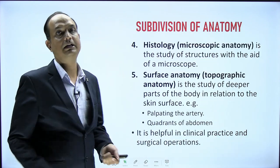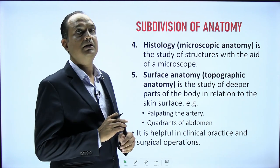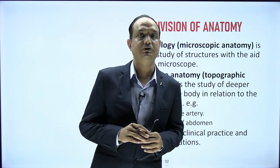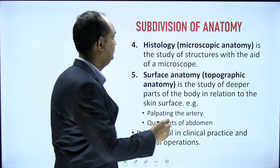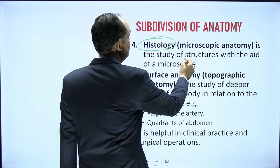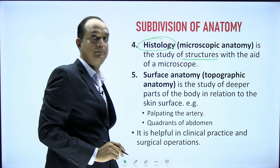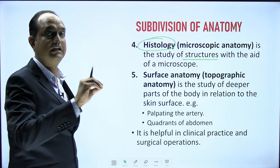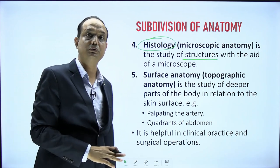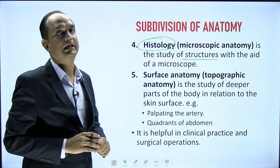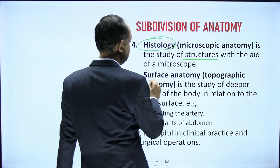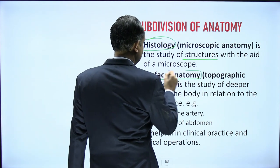Another way to study anatomy is microscopic anatomy, known as histology, where you use a microscope to see structural details such as cellular formation and different types of tissues.